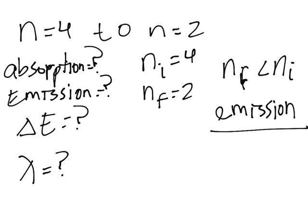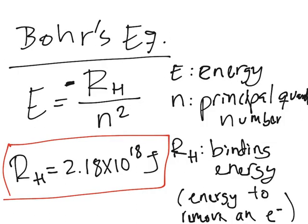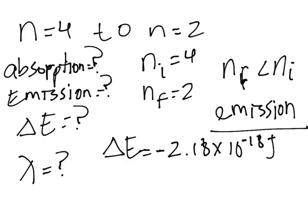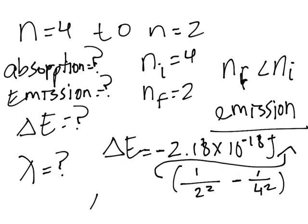Now we have to find the energy of emission, the difference in energy. That will be negative rh. So negative 2.18 times 10 to the negative 18 joules times 1 over n-f squared, 2 squared, minus 1 over 4 squared. That will be equal to negative 4.08 times 10 to the negative 19 joules. That's our delta energy. And as you can see, it's negative, so it's proving that it's emission again.